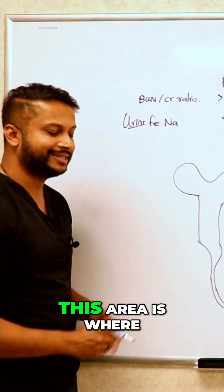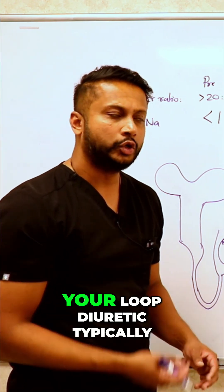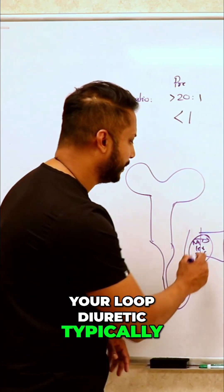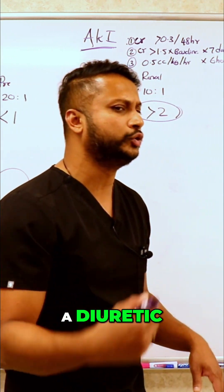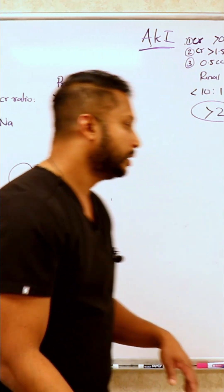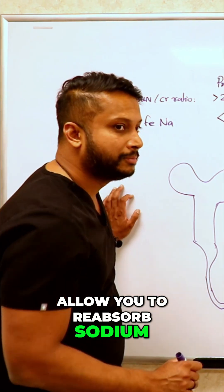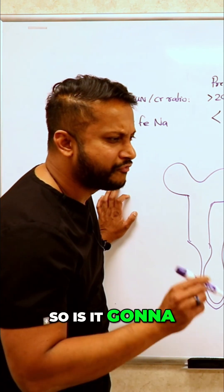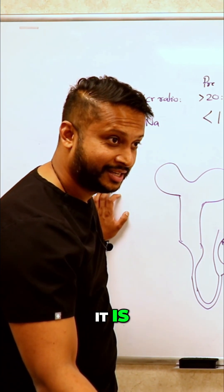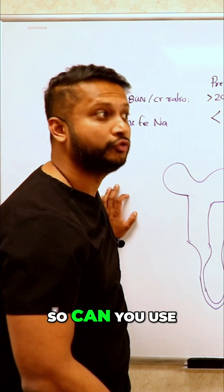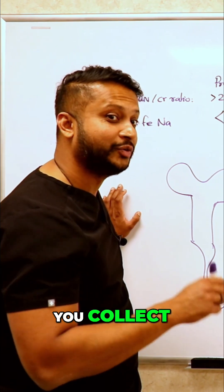This tubule, this area is where you reabsorb sodium, potassium and 2 chloride. Your loop diuretic typically blocks this. So if somebody's on a diuretic, is it gonna allow you to reabsorb sodium? No. So is it gonna force you to pee sodium in the urine? Yes it is. So can you use sodium as a marker in the urine that you collect? You cannot.